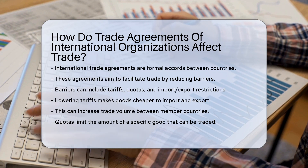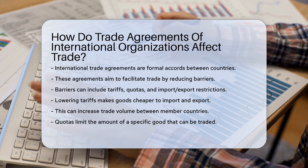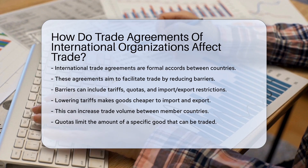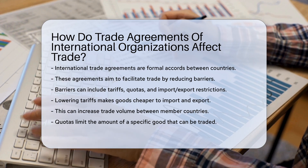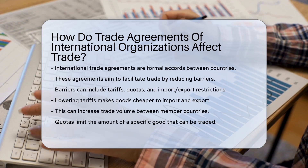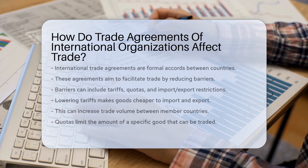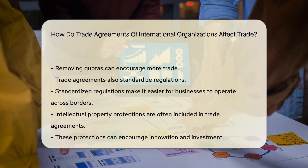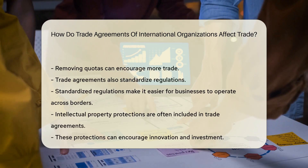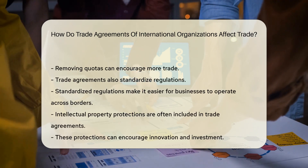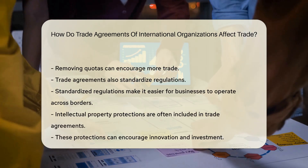Lowering tariffs makes goods cheaper to import and export, which can increase trade volume between member countries. Quotas limit the amount of a specific good that can be traded, and removing quotas can encourage more trade.